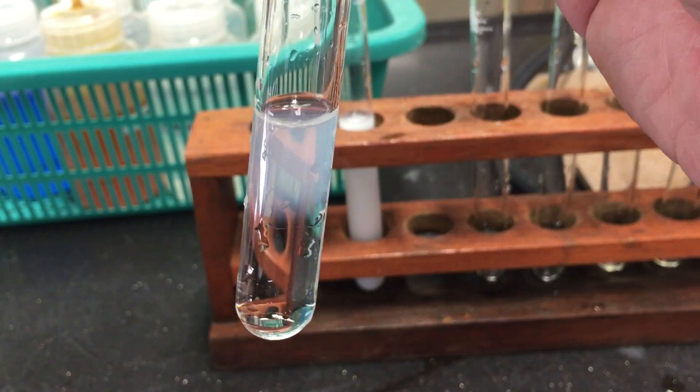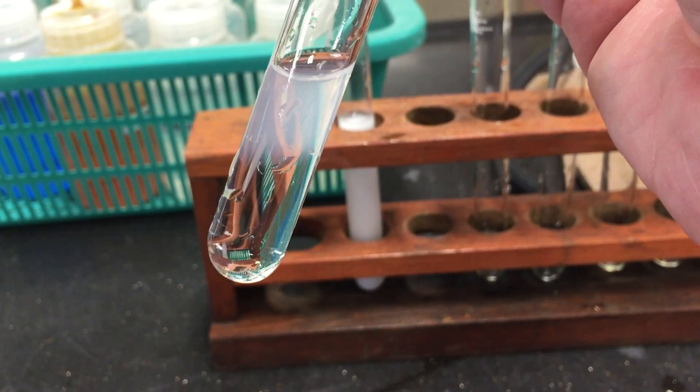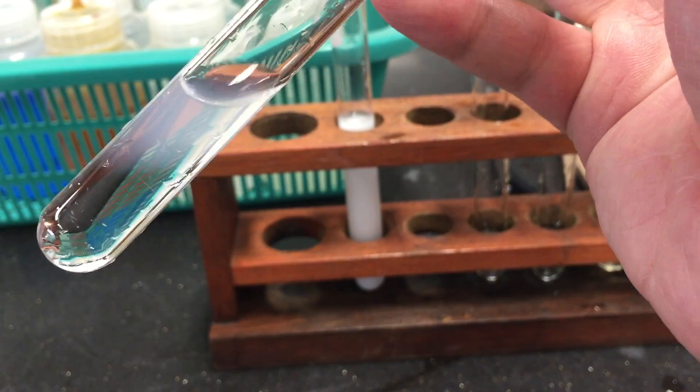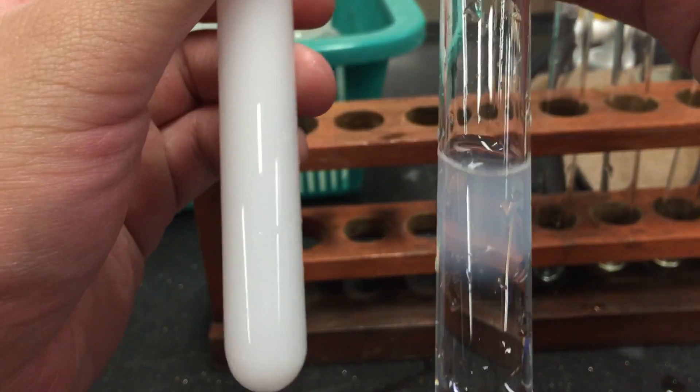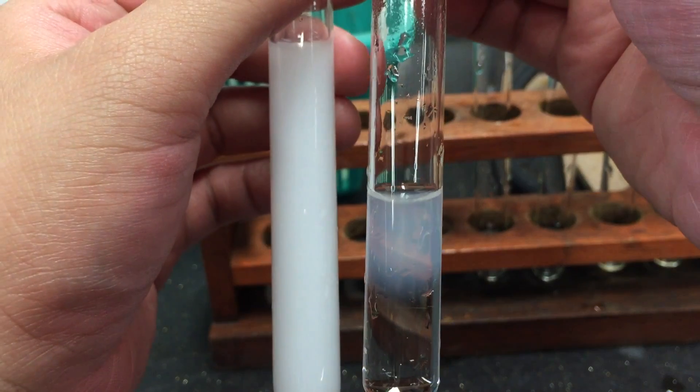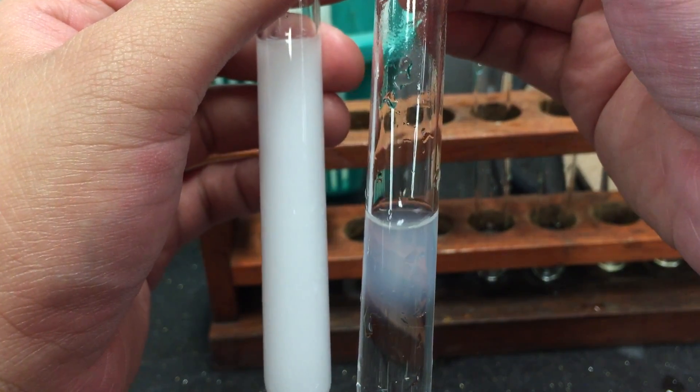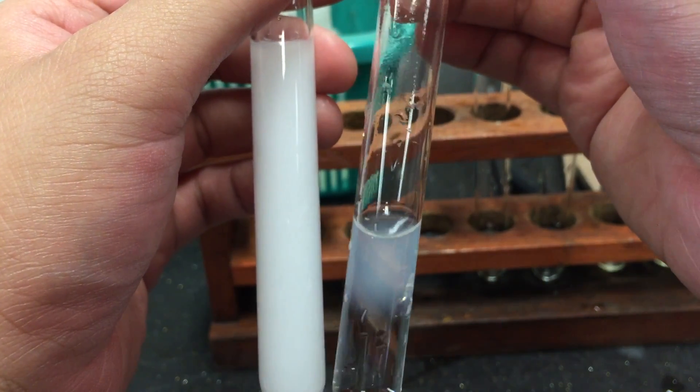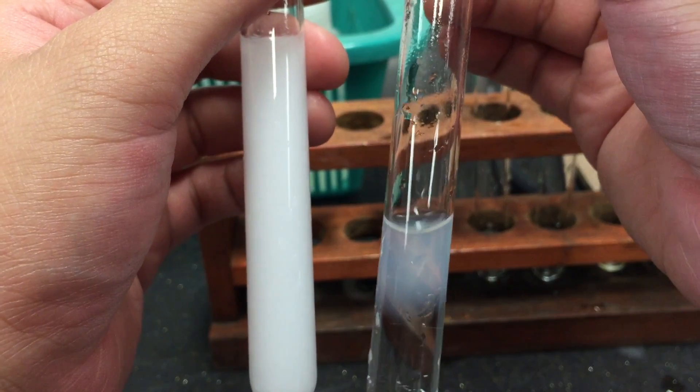We can compare this precipitate with the precipitate we obtain from the addition of sodium hydroxide. Notice that this faint white precipitate is not as dense as the white precipitate obtained from the sodium hydroxide experiment.